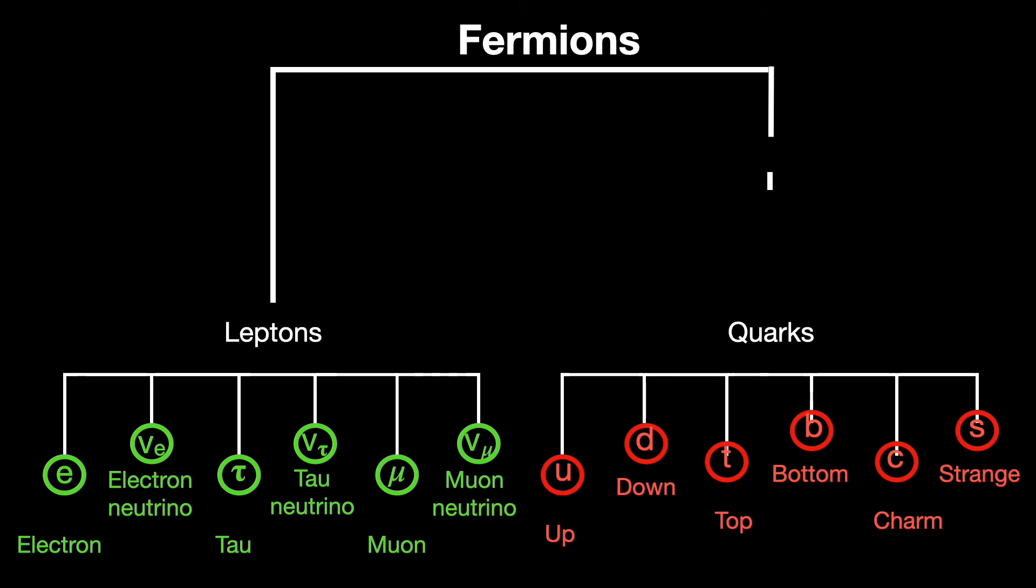So we've listed 12 fundamental particles in all, but in fact there are 24, because each of these particles has an anti-particle, each of which in terms of charge has exactly opposite properties.